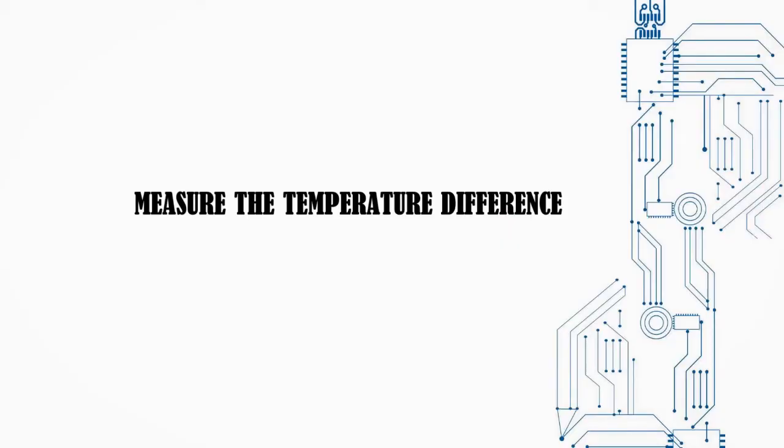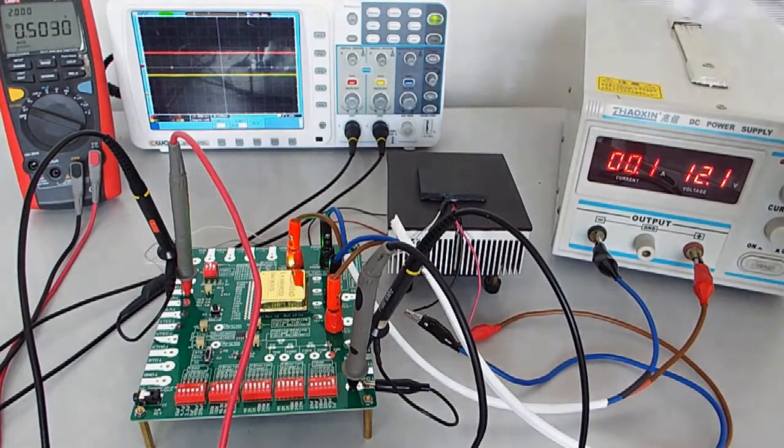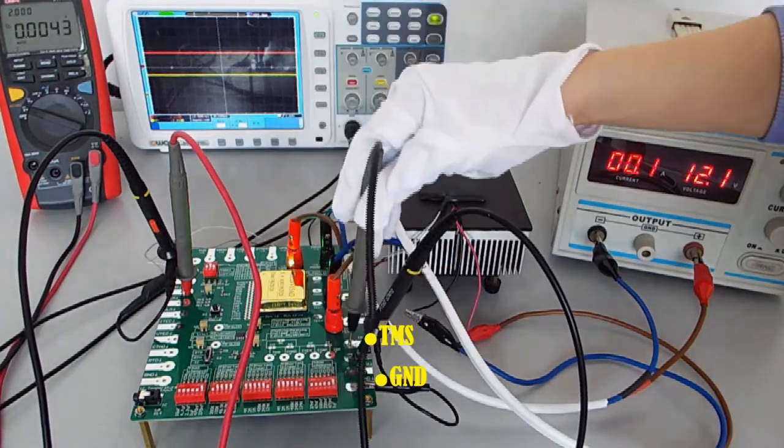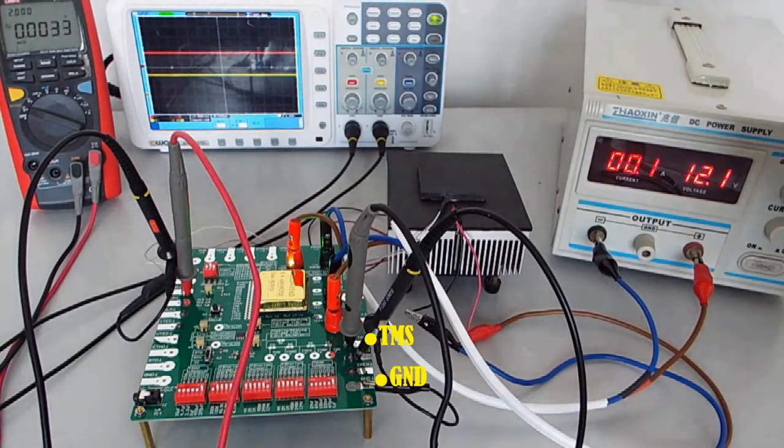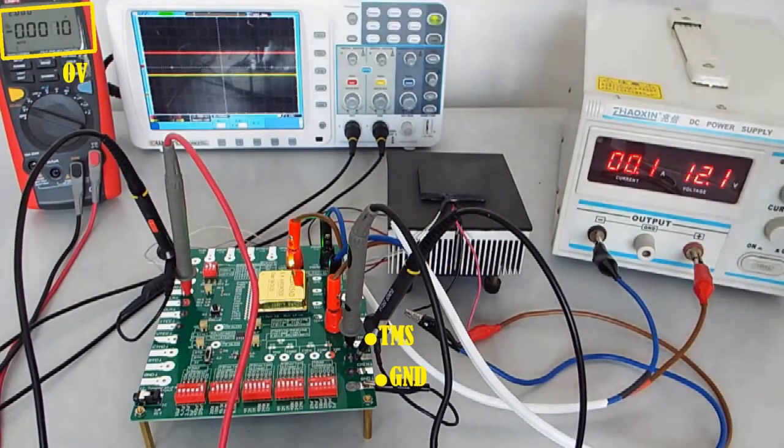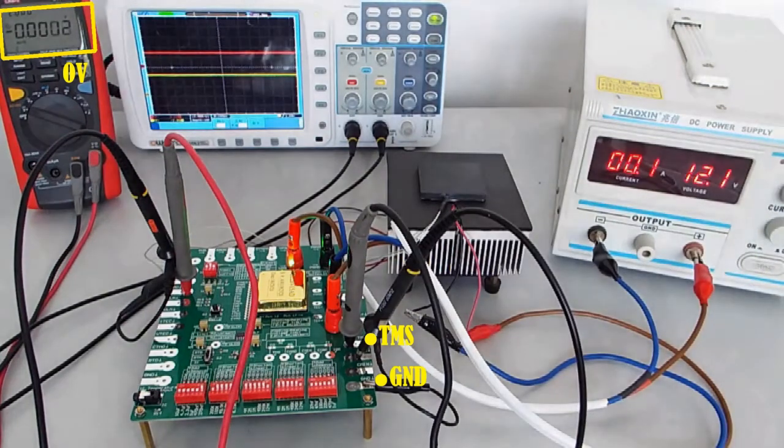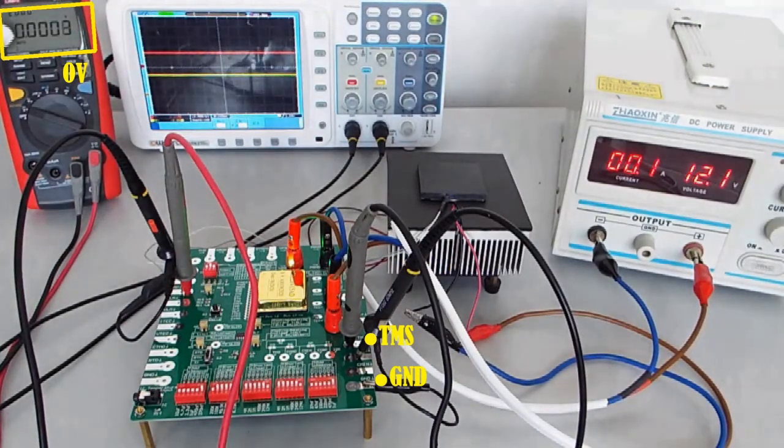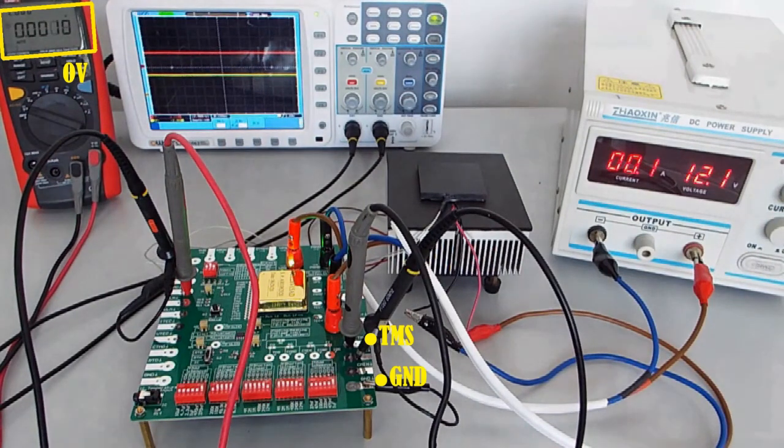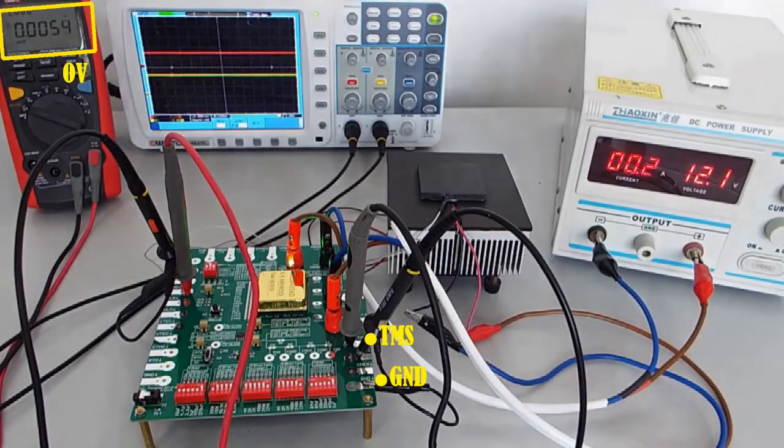Measure the temperature difference. Change the black light of the multimeter from GND to TMS and the red light is at TMO pin. Observe the reading of the multimeter which is close to 0 volts. It means that the TMO pin and the TMS pin have the same voltage, which proves that the output temperature is the same as the set temperature.